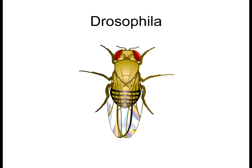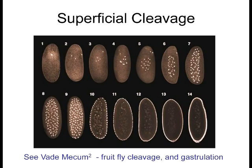Drosophila has syncytial meroblastic cleavage — meroblastic because it doesn't split all of the cytoplasm or yolk, only the peripheral region. The middle area is all yolk, providing nutrients for the cells. The periphery of the yolk has the lowest density of yolk material, which is why mitosis and cleavage occur in that outer region.